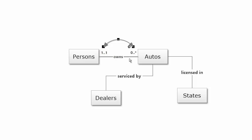Minimum 1, maximum 1, minimum 0, maximum of many. To read this, you would say that each person in the database owns a minimum of 0 and a maximum of many autos. Each automobile in the database is owned by a minimum of 1 and maximum of 1 person.